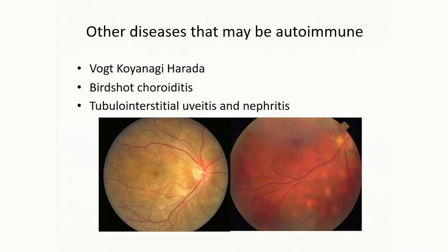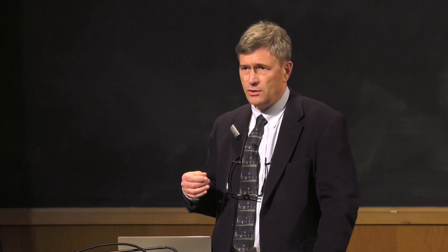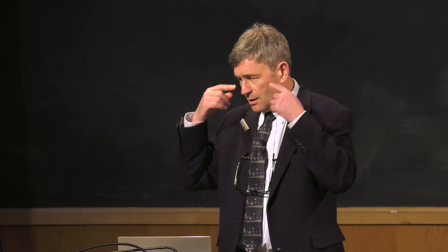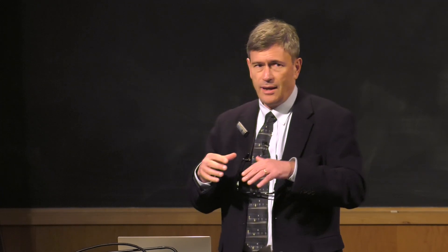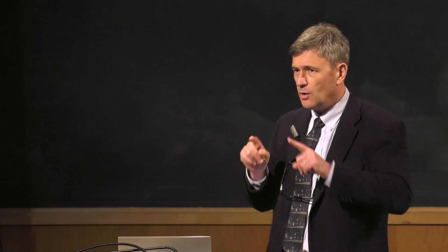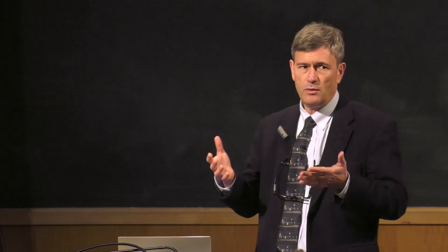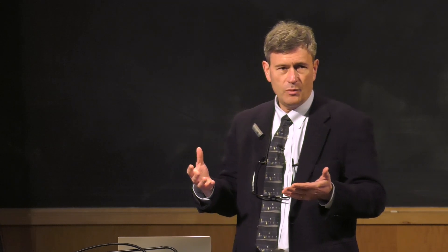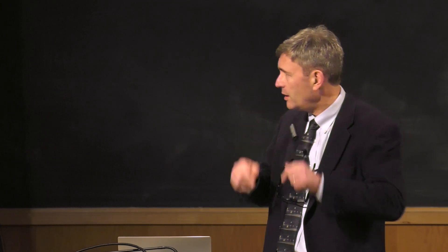Most of the autoimmune diseases we know are fairly rare syndromes. Vogt-Koyanagi-Harada disease features tinnitus, uveitis, and vitiligo — you get patches of depigmented skin and ringing in the ears and go blind — because of an autoimmune reaction to melanin, which is found in your skin, your inner ear, and your eyes.